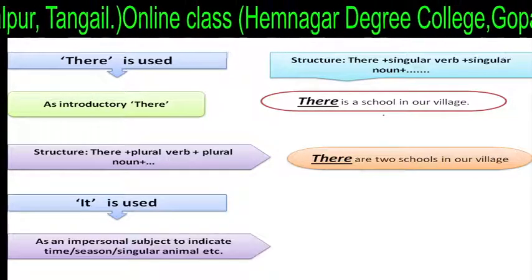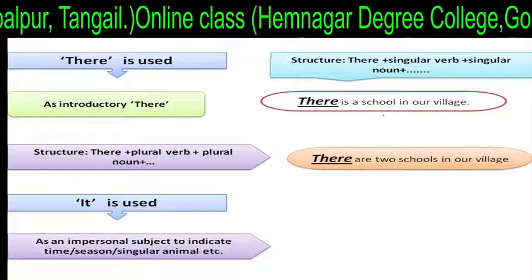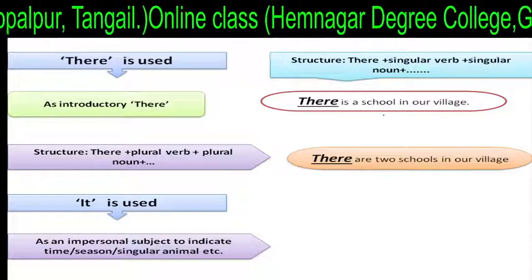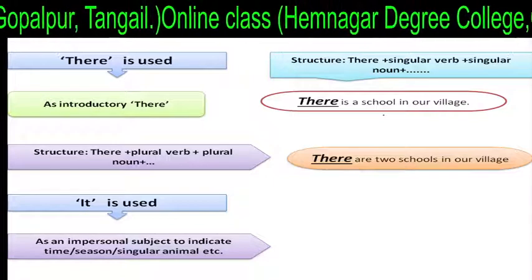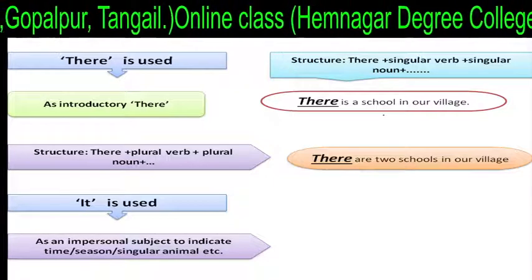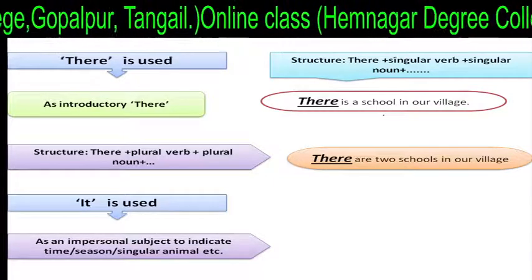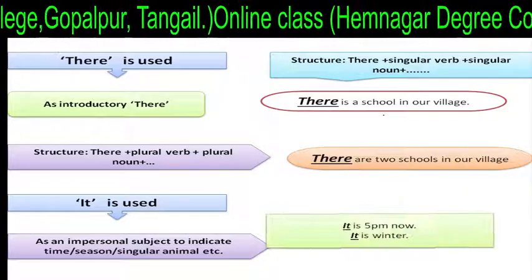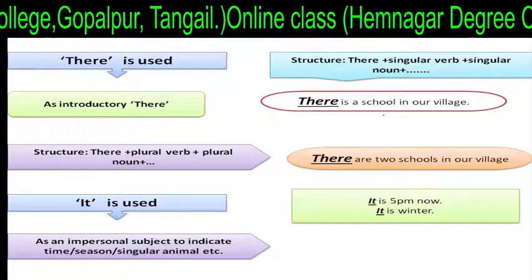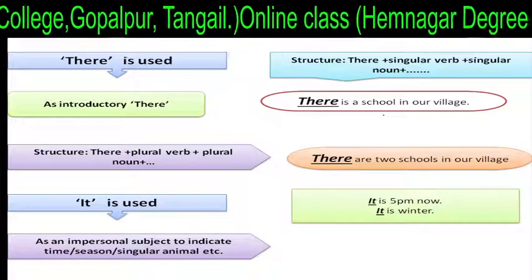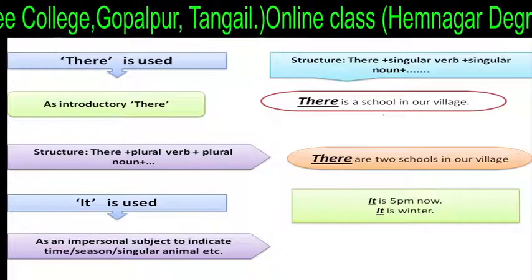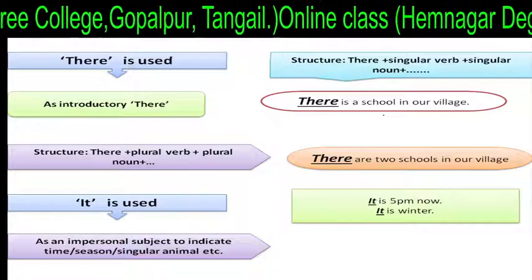It is used as an impersonal subject to indicate time, season, or a singular noun. For example: 'It is 5 p.m. now.' 'It is winter.'